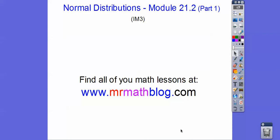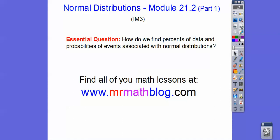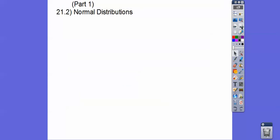Hey, folks. Normal distribution. I think I'm going to do this in two parts. I can cram it all in one, but I don't know. I think it would be better to do it in two. So let's see. Module 21.2 in our IM3 book. So how do we find the percents of data probabilities of events that have normal distributions?